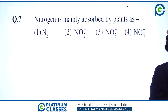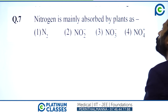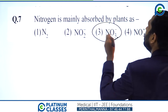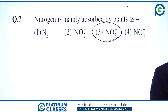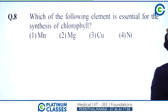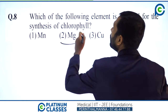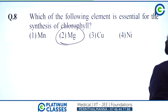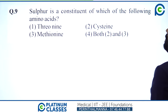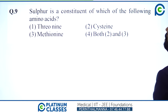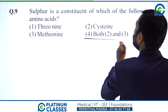Nitrogen is mainly absorbed by plants as NO3 minus (nitrate) — option 3. The element essential for the synthesis of chlorophyll is magnesium — option 2. Sulfur is a constituent of the amino acids cysteine and methionine — option 4.